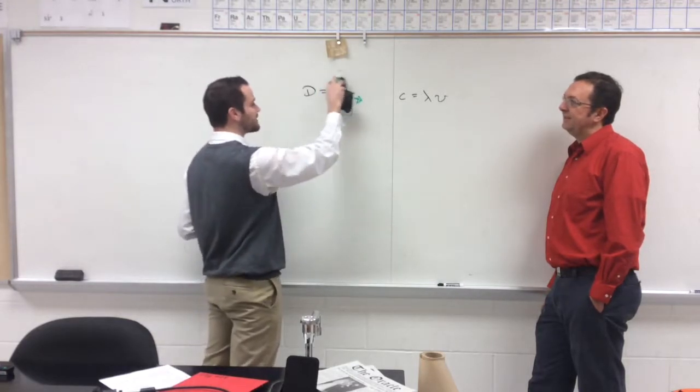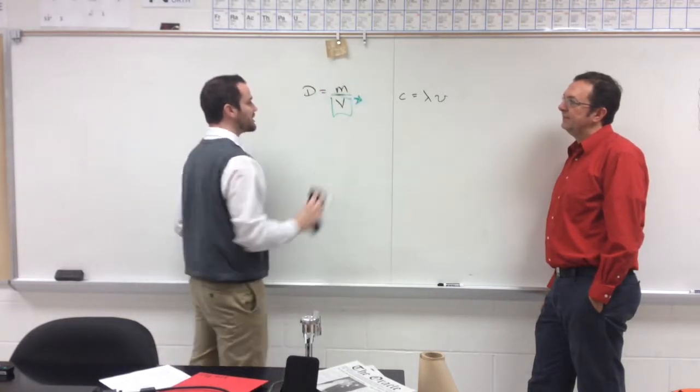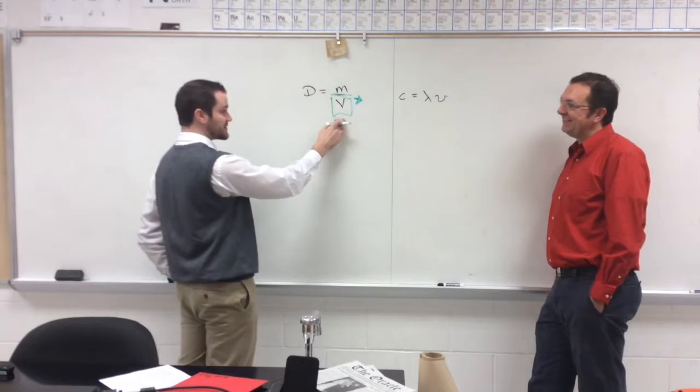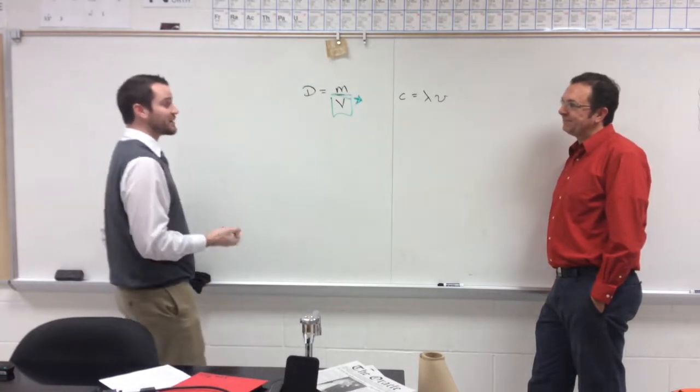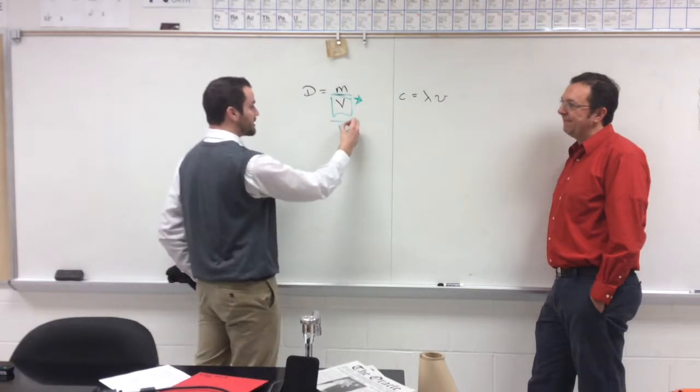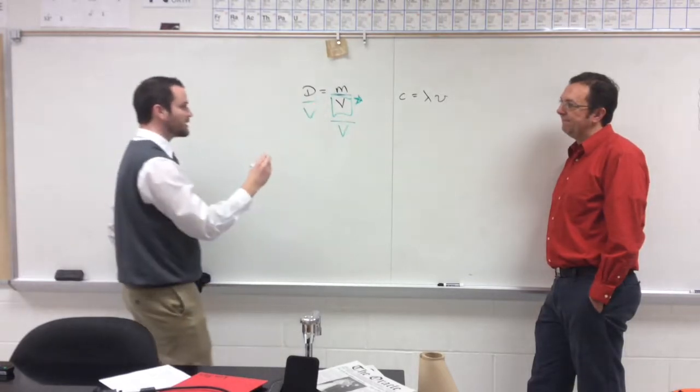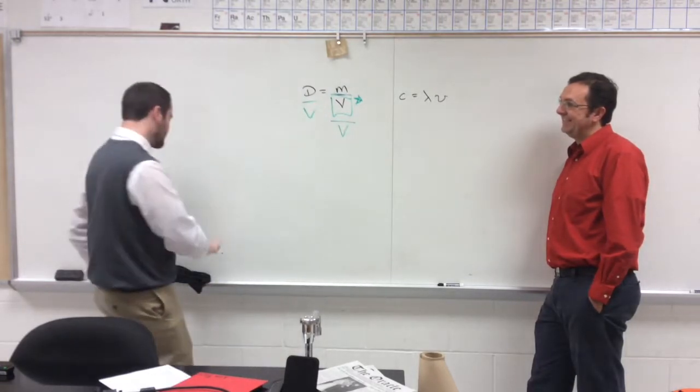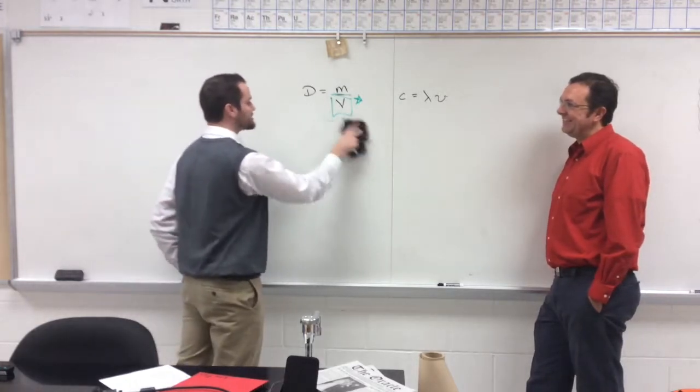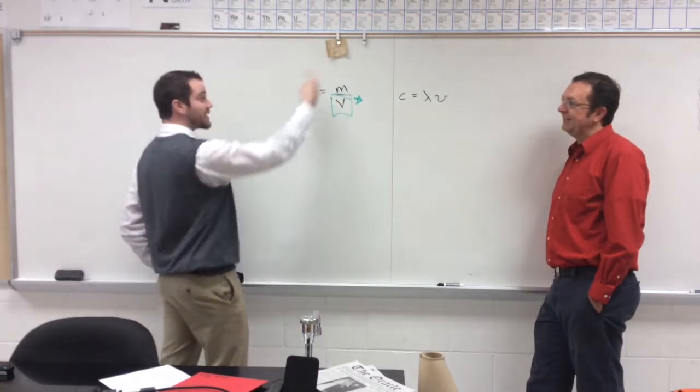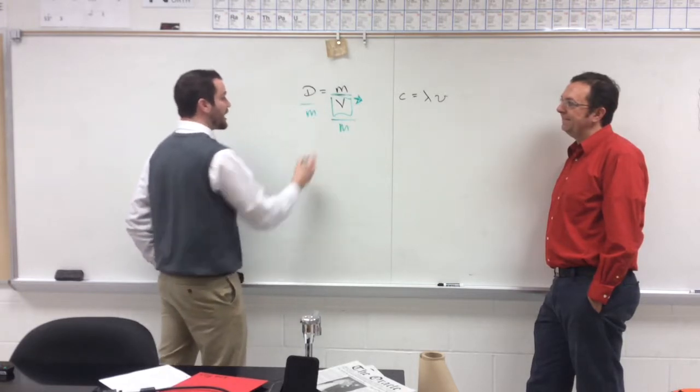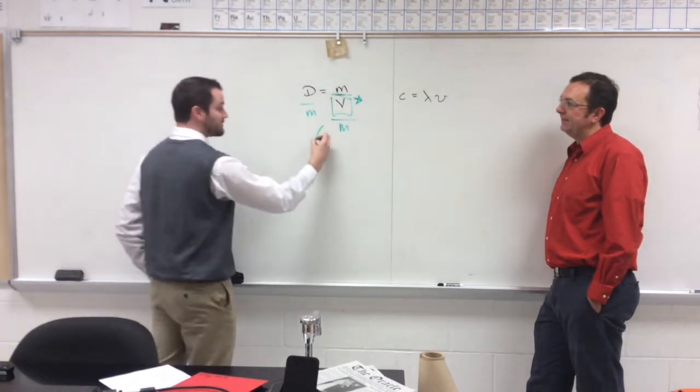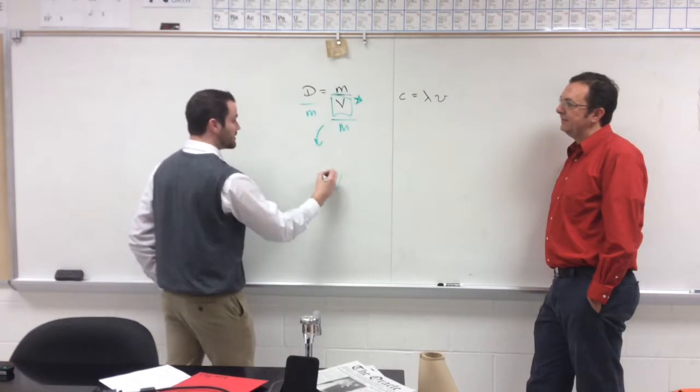When you ask them to isolate for something that's underneath the denominator, they do the same thing. They'll divide both sides by V to make the V go away. Or if they want to get V to be by itself, what they'll do is try to get the other variable to disappear. They'll divide both sides by M, and in their opinion this magically becomes V equals D divided by lowercase M.